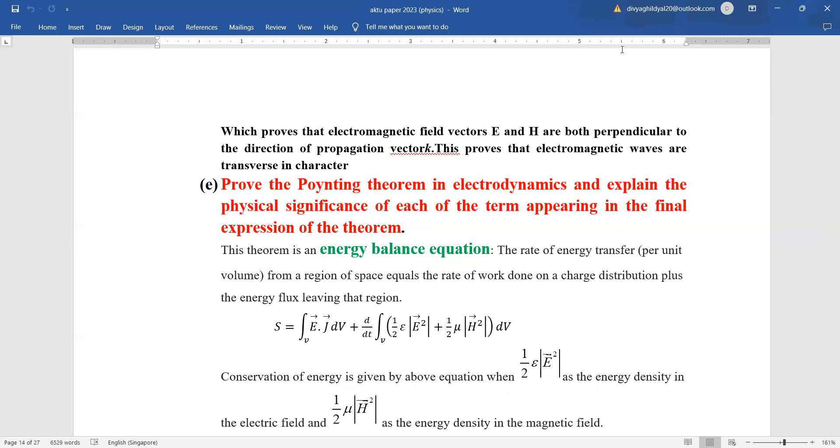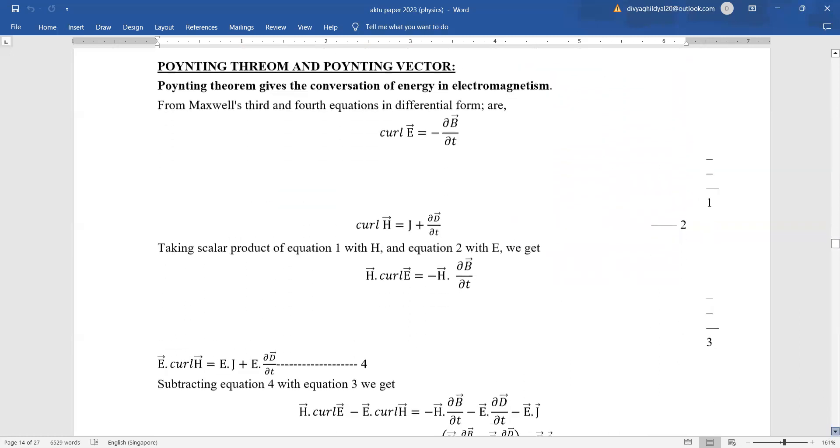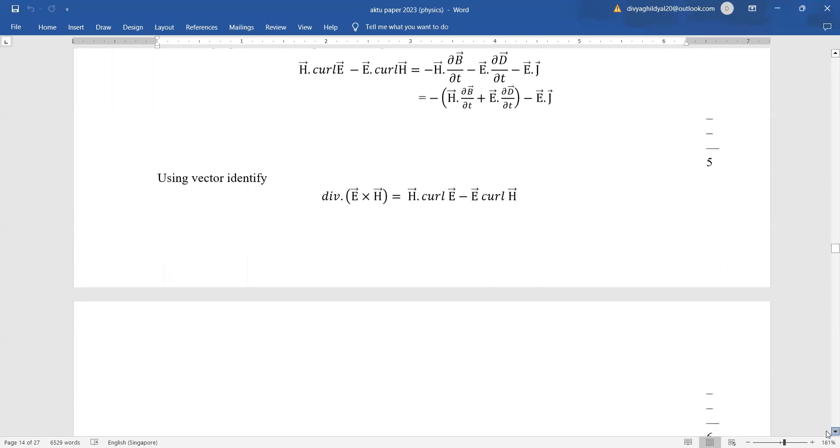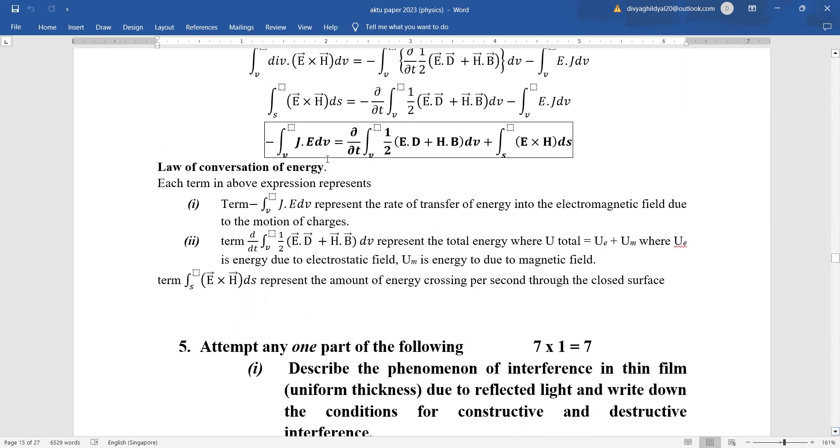Poynting theorem. This is an energy expression in electromagnetic field and they are asking you to explain the meaning of each term here. Half epsilon naught e square is energy density due to electric field. Half mu h square is energy density due to magnetic field. You pick it up from Maxwell's equations, multiply on either side, subtract and simply in the third step you get your expression for Poynting equation. Here the term j dot e dv represents rate of transfer of energy into electromagnetic field due to motion of charges. This term e dot d plus h dot b represents total energy due to electric field magnetic field and e cross h is the Poynting vector.